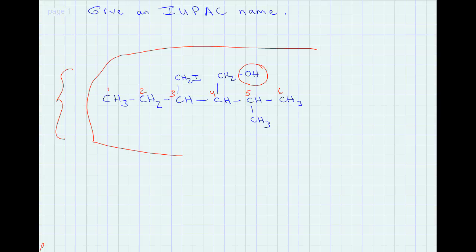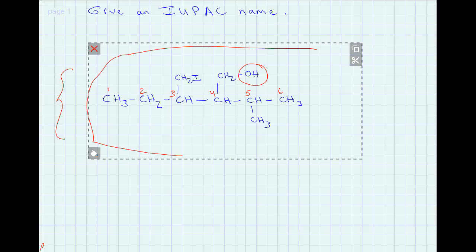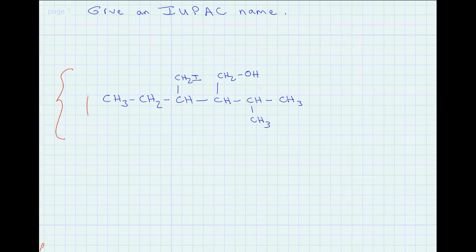So we delete that chain and instead look for the longest chain that contains the hydroxyl group. That chain is carbon 1, 2, 3, 4, 5 — so instead of six carbon atoms, the correct longest chain including the hydroxyl group is only five carbon atoms long. We start numbering from the end closest to the hydroxyl group.